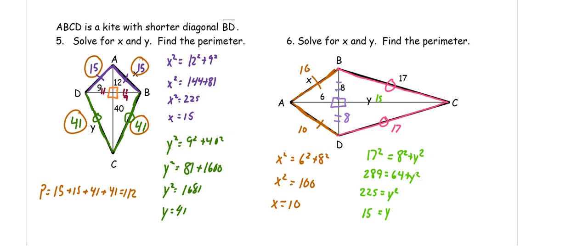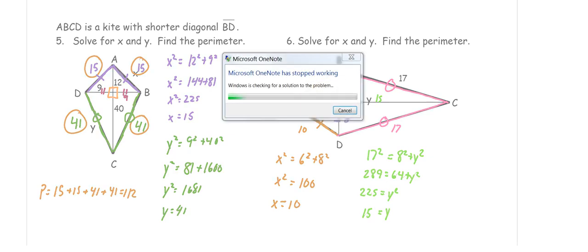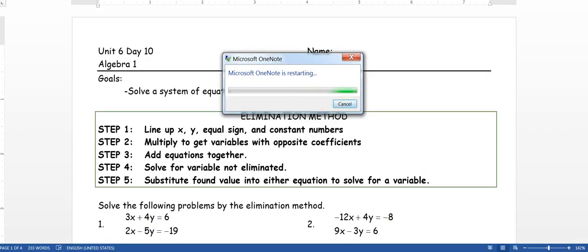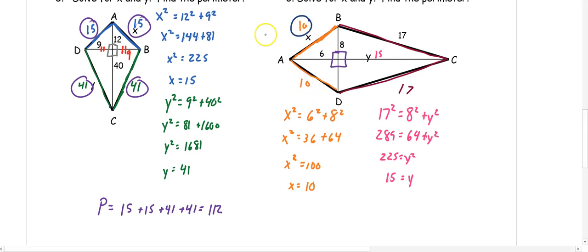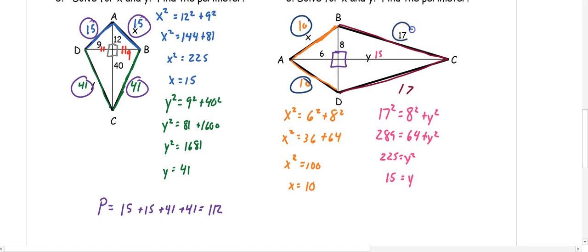The last step is to find the perimeter. We have sides of 10, 10, 17, and 17. So the perimeter equals 10 + 10 + 17 + 17, which gives us 54.